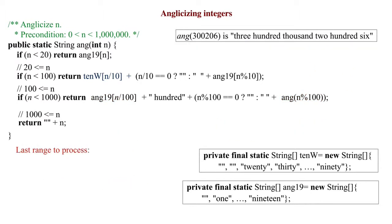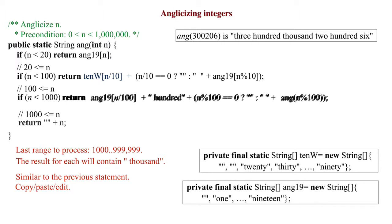The last range to process is 1000 and greater, up to just below 1 million. The resulting string will contain the word thousand. This case is quite similar to the previous case of n in the range 100 through 999, so we handle it by copying, pasting, and editing.